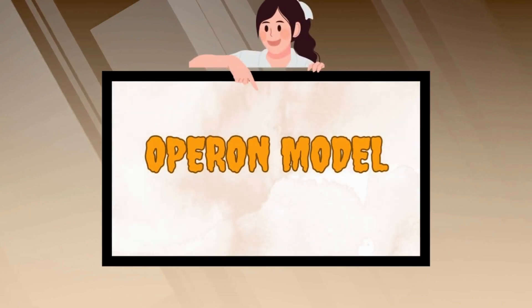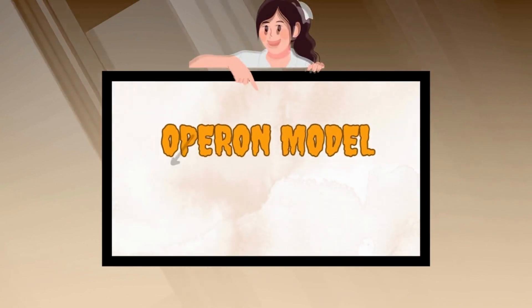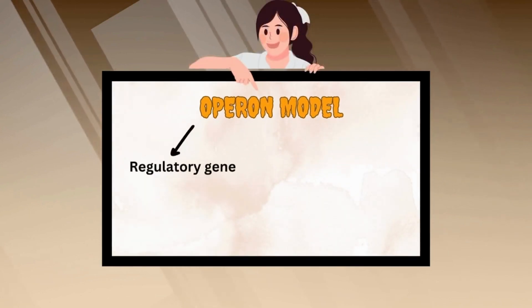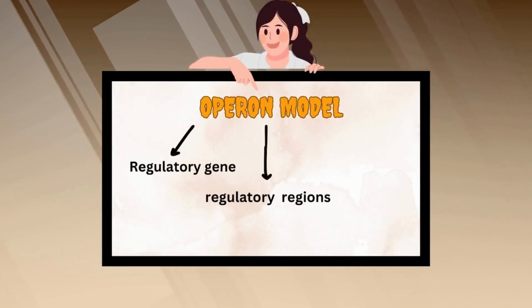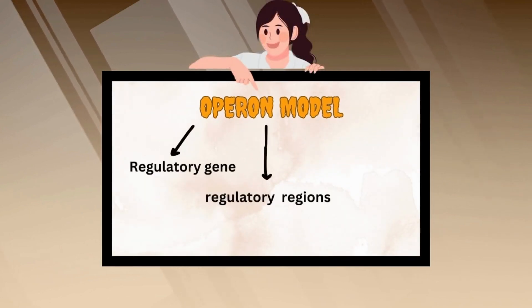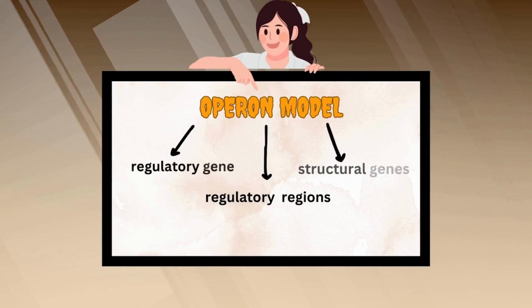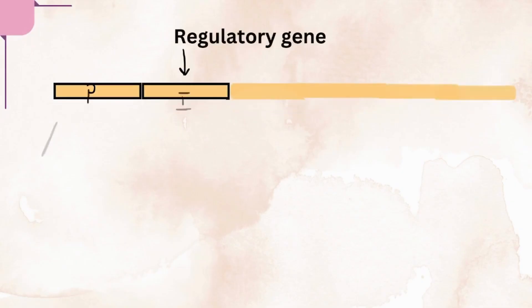Now let's discuss the operon model. It consists of three components: regulatory gene, regulatory regions, and structural genes.